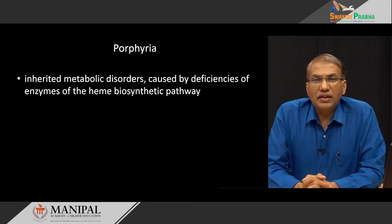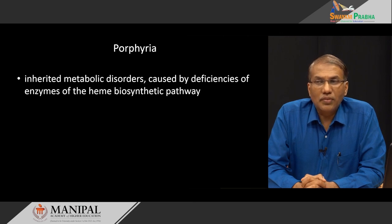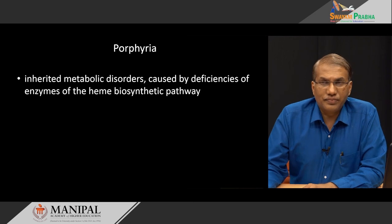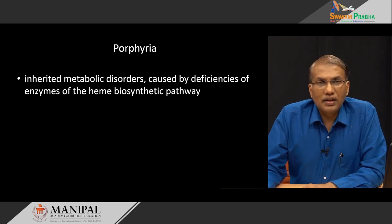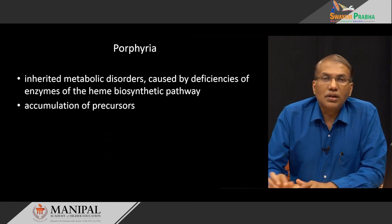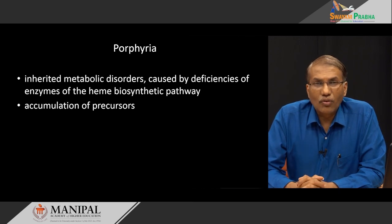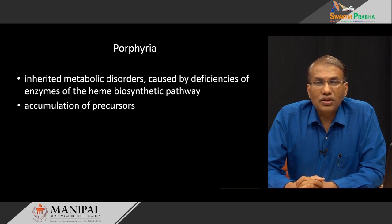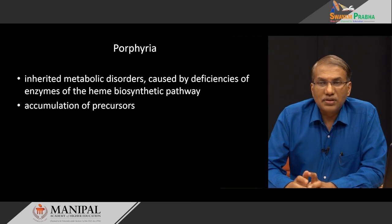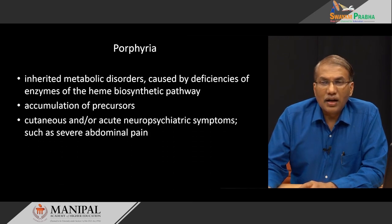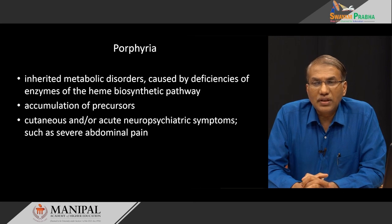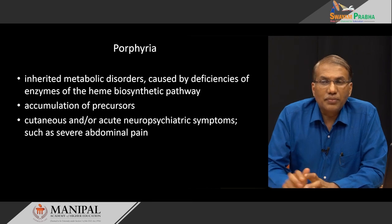Porphyrias are nothing but inherited metabolic disorders caused by deficiency of an enzyme of the heme biosynthetic pathway. However, it need not always be inherited — sometimes there is also a category called acquired porphyrias. What exactly happens is the accumulation of precursors in the heme synthesis pathway, which can lead to severe cutaneous and neuropsychiatric symptoms including severe abdominal pain.